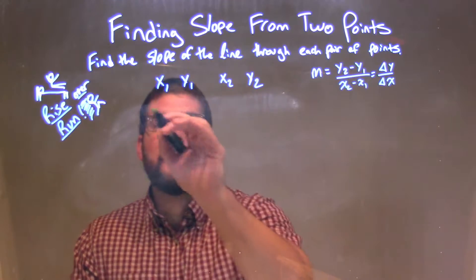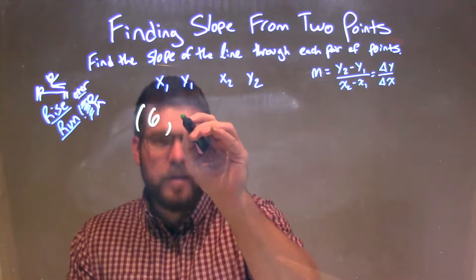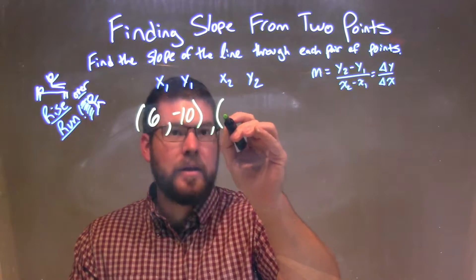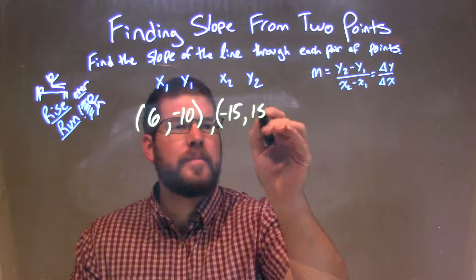So if I was given these two points here: 6, negative 10, and my second point being negative 15, positive 15.